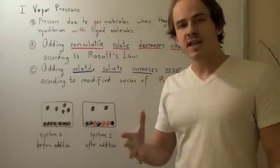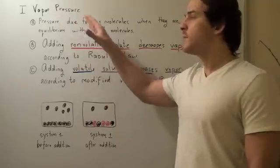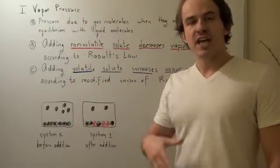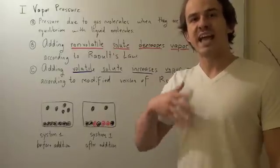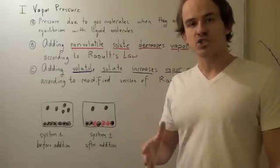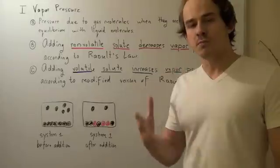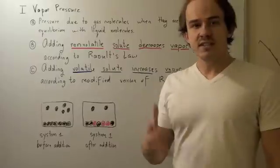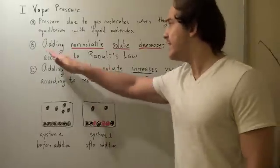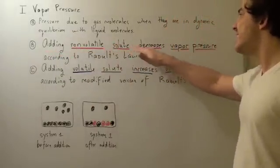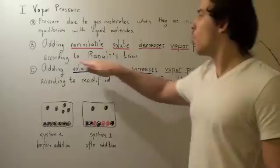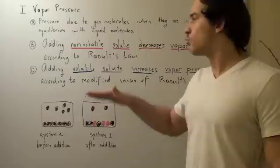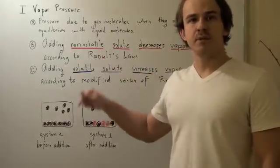If you want to go into more detail about vapor pressure, check out my link below. Vapor pressure is simply the pressure due to the gas molecules found in dynamic equilibrium with their liquid molecules. Adding a nonvolatile solute decreases vapor pressure, according to Raoult's law. If you want to learn more about Raoult's law, check out my link below.